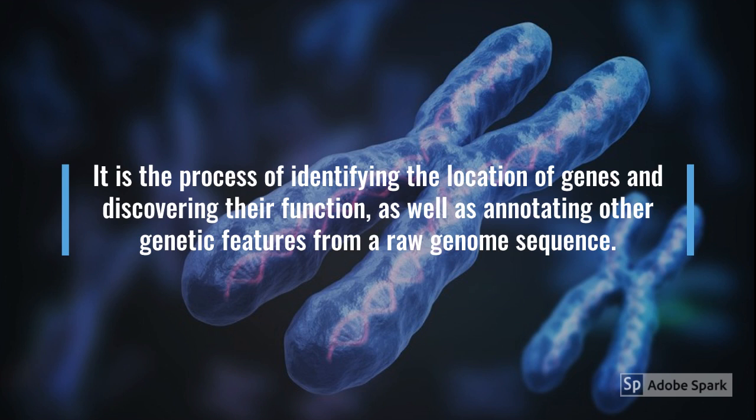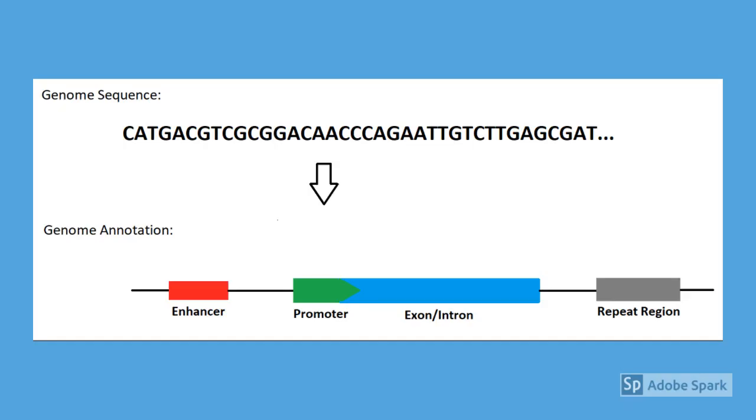From a raw sequence, this process can occur automatically or manually. This diagram I have created shows the process of genome annotation from a visual perspective. As you can see at the top, the genome sequence consists of a list of DNA bases, C, G, T and A.